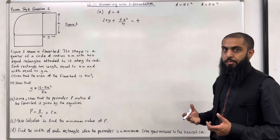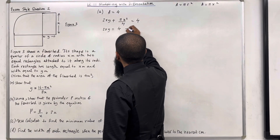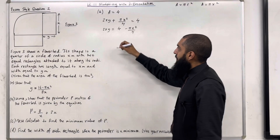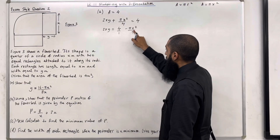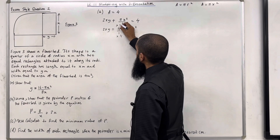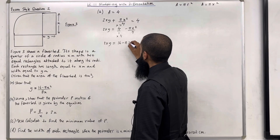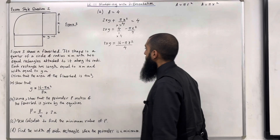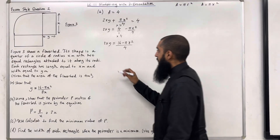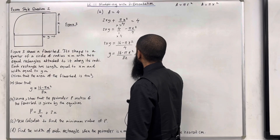We need to make y the subject. Rearranging: 2xy equals 4 minus pi x squared over 4. Combining the right-hand side over a common denominator of 4: 2xy equals (16 minus pi x squared) over 4. Dividing both sides by 2x: y equals (16 minus pi x squared) over 8x, as required.